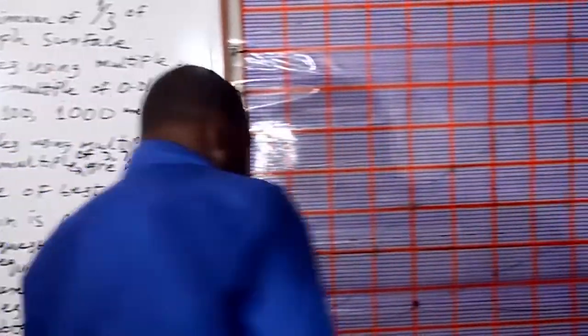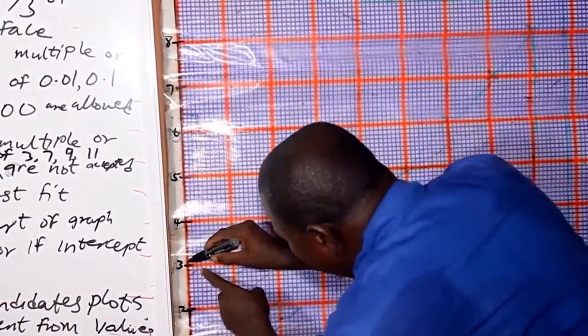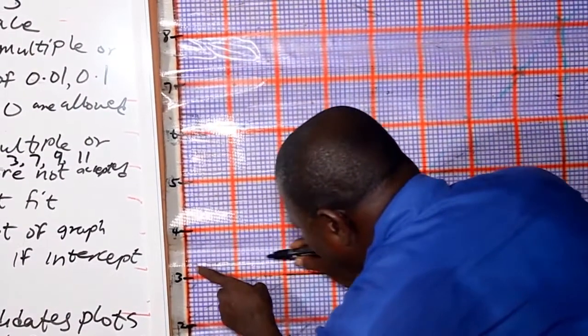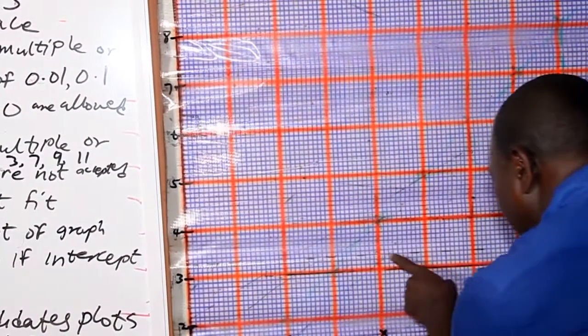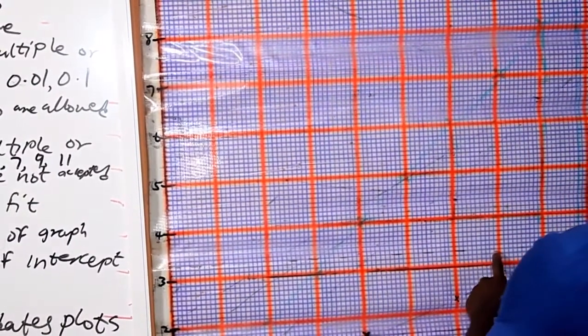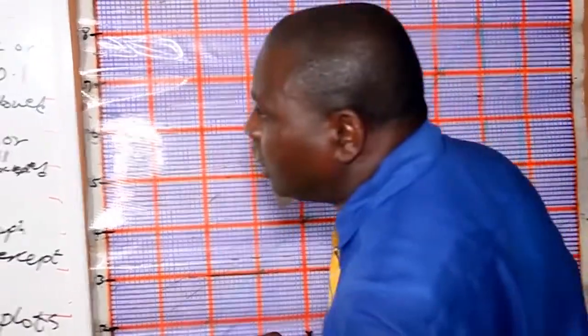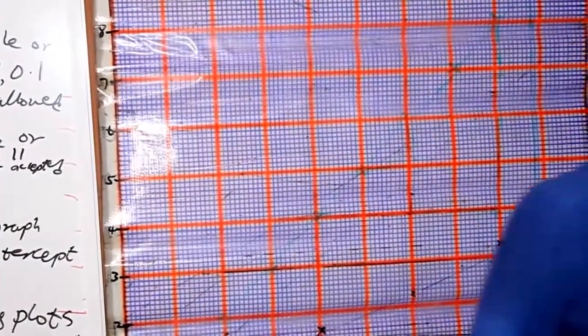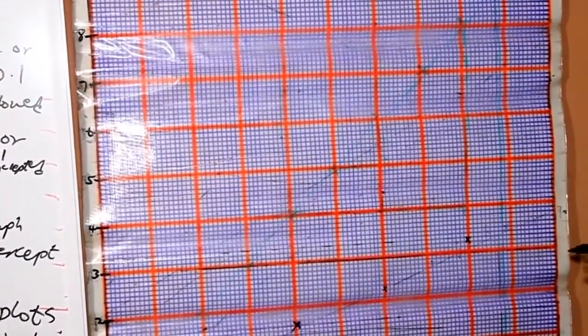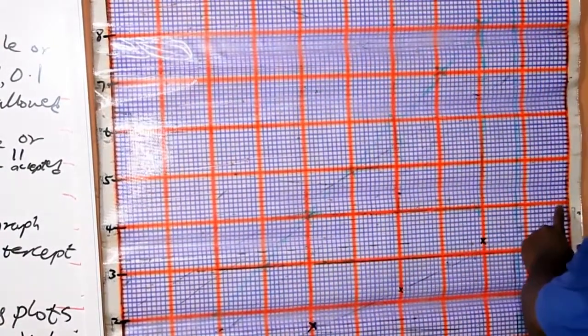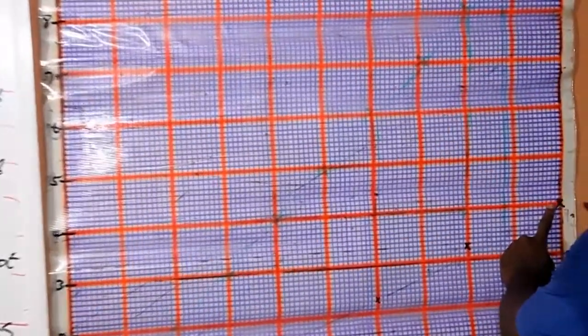Then, the next one is 3.24 against 80. 3.24, 3.1, 3.2, 3.3. It will be between the second and third. So you trace it to 80. This is it. The next one is 4.0 against 100. This is 4.0 against 100.